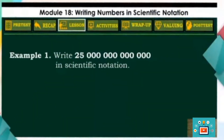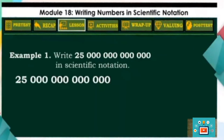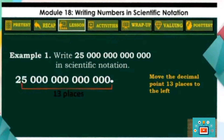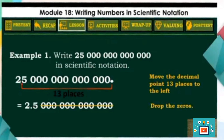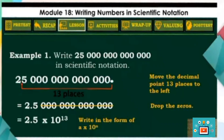Let us now write 25 trillion in scientific notation. First, we have to identify the decimal point. Since there is no decimal point in the given number, it means that it is written on the rightmost side of the number. Then move the decimal point 13 places to the left so that we will have 2.5. We drop the zeros and write it in the form A times 10 to the N, which is 2.5 times 10 to the 13th power. The 13 denotes the number of decimal places the decimal point has been moved.